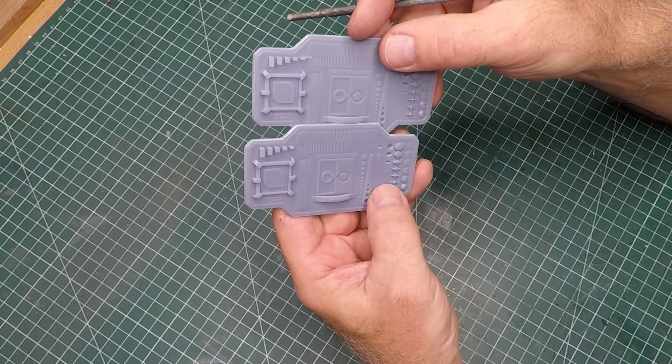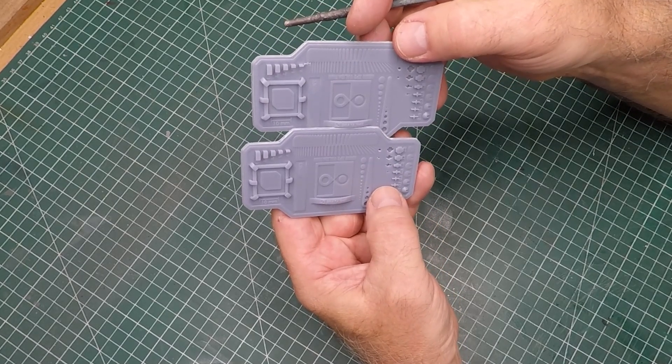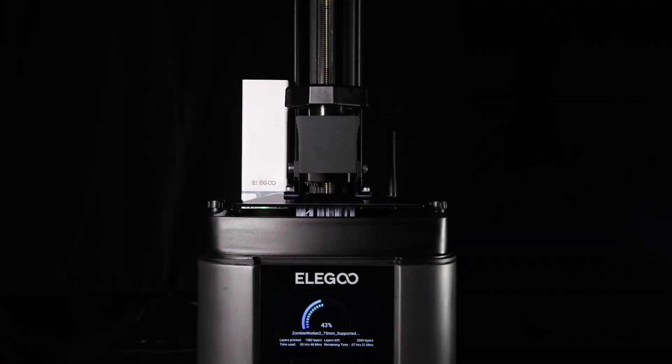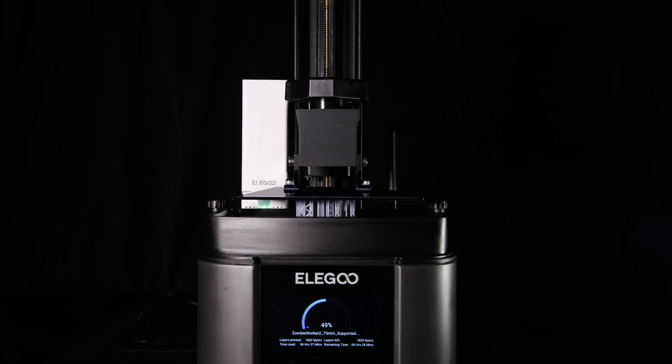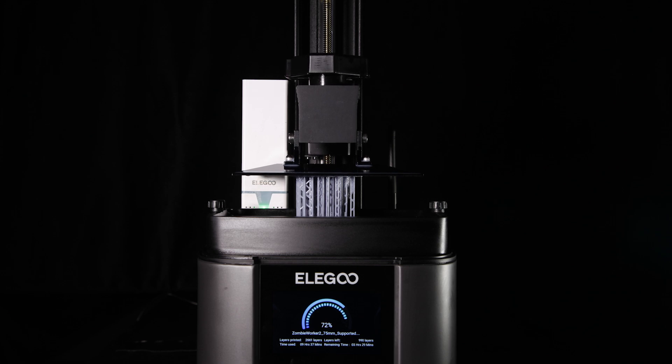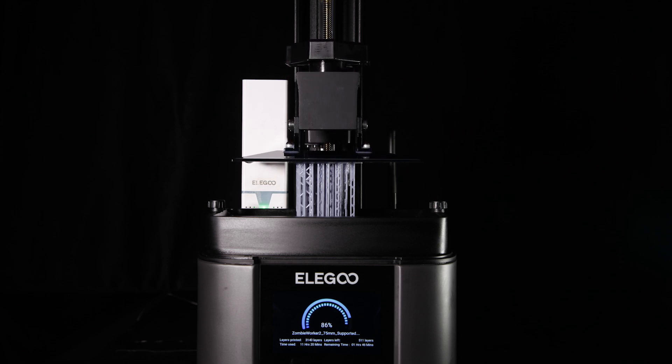Now all that done I went straight into printing a larger scale print and this particular print was one that I got from Loot. It's like a post-apocalyptic survivor and it took about 18 hours to print at exposure time of four point seven five seconds and a layer height of zero point zero two five.